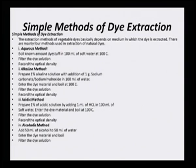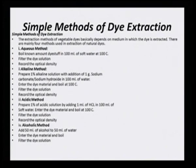For simple methods of dye extraction when exploring new sources, the extraction methods of vegetable dyes basically depend on the medium in which the dye is extracted. There are mainly four methods. Do not confuse these with the earlier extraction methods — this is at a laboratory scale for screening a new dye to determine whether aqueous extraction, alcoholic extraction, adding acid, or adding alkali would help.